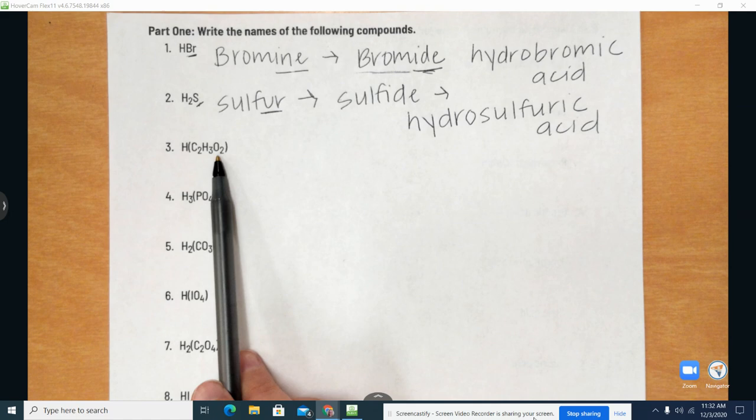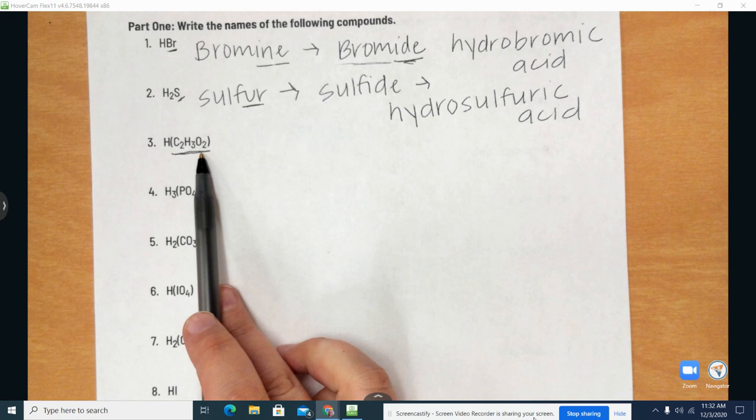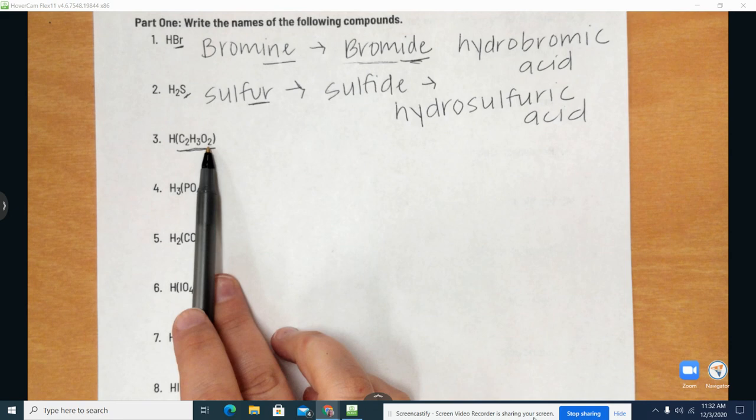All right, so then we have number three. So we have HC2H3O2. So again, we're just caring about the anion, the one in the back, the one with the negative charge.